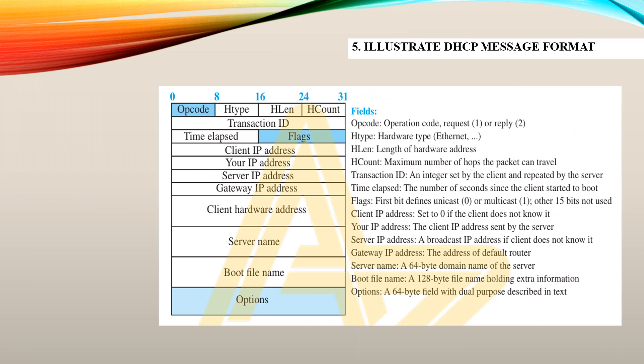Moving on to the next question: illustrate the DHCP message format. DHCP stands for Dynamic Host Control Protocol. The complete format includes fields from opcode to options, and each must be explained. The opcode, hardware type (H type), hardware length, and hop count are among the key fields. Hardware type specifies the kind of network — whether Ethernet, LAN, WAN, or MAN. Hardware length specifies the length of the hardware address, whether it is 8, 16, 24, or 32 bytes. Each field in the format must be explained in detail with the diagram.